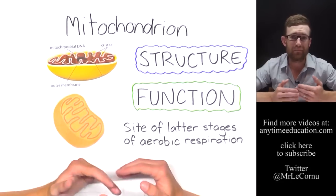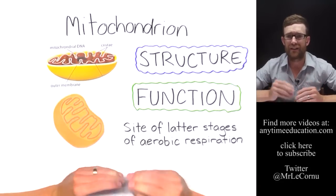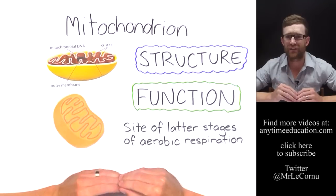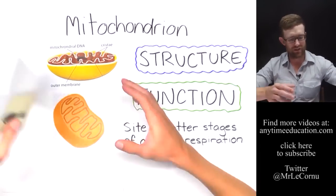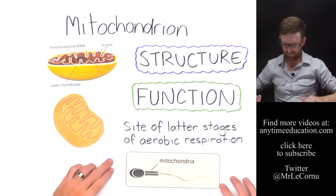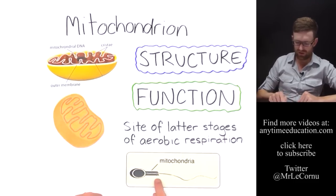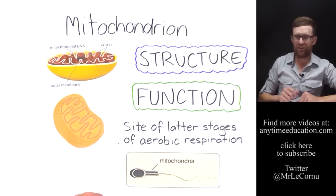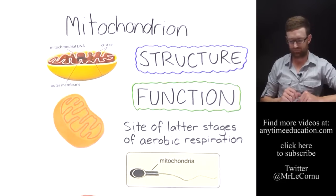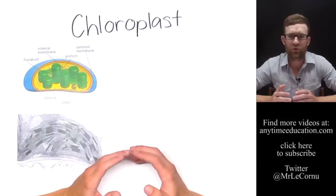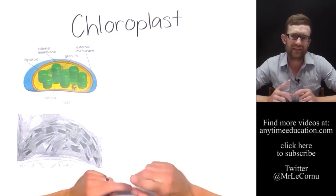Many mitochondria are often found in areas of cells that need lots of energy. For example, the sperm has lots of mitochondria located around the tail, where it requires energy.